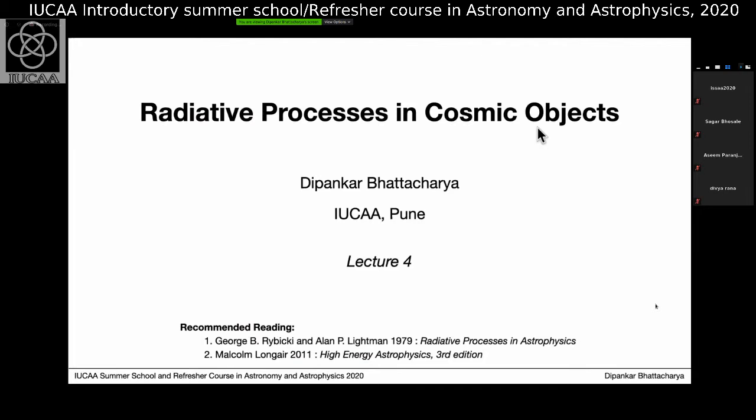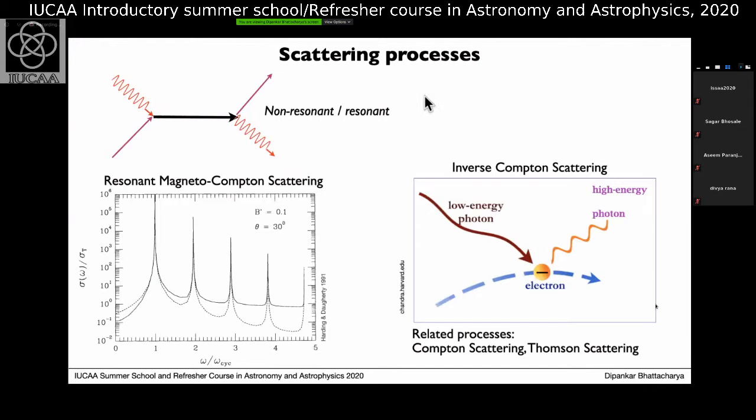Welcome to the fourth lecture on radiative processes in cosmic objects. So far we have looked at single particle emission and absorption processes, the general principles of how to set that up, and specific examples like Bremsstrahlung and synchrotron emission. Today I will begin with scattering processes.